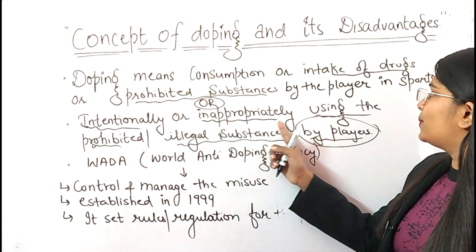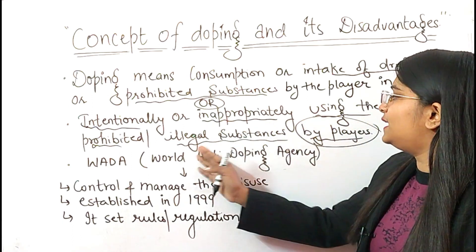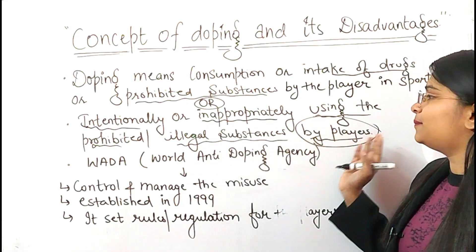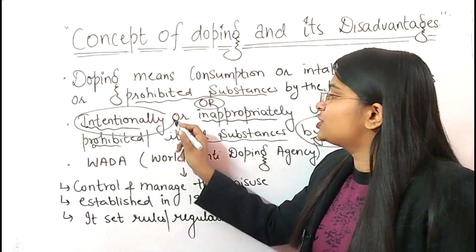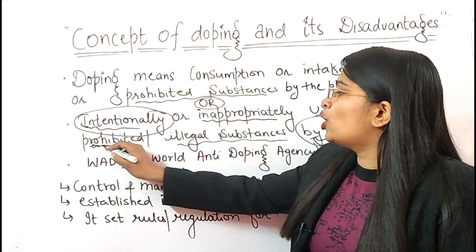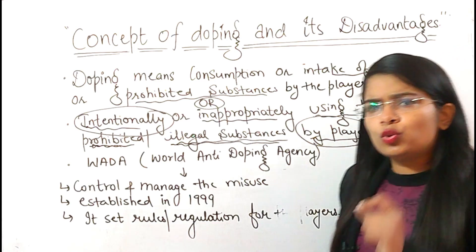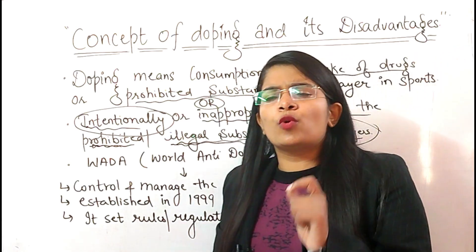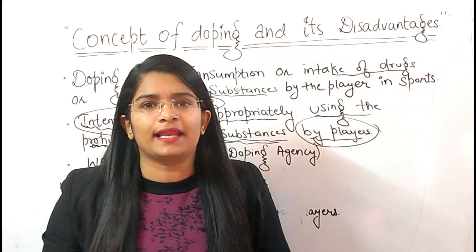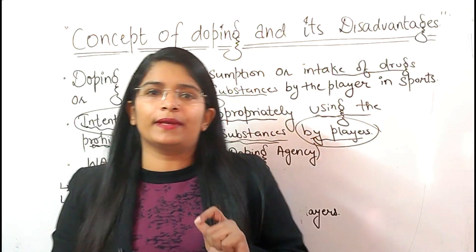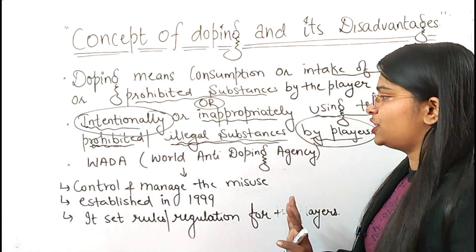Intentionally or inappropriately using a prohibited or illegal substance as a player — that is our definition of doping. If a player is intentionally using a prohibited or illegal substance in sports, then we will call it doping. You can use either definition.